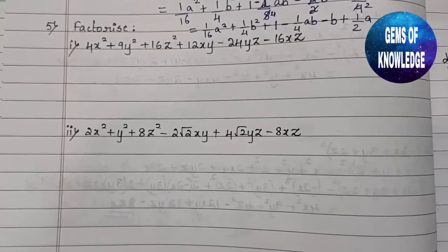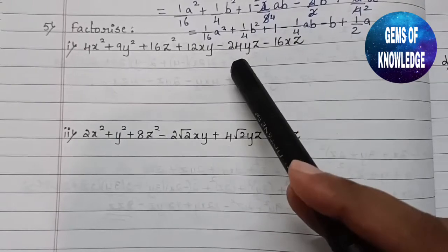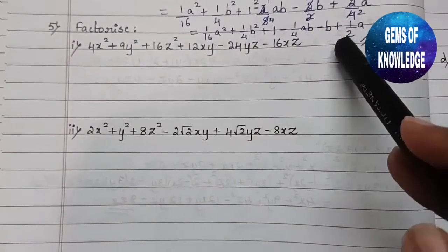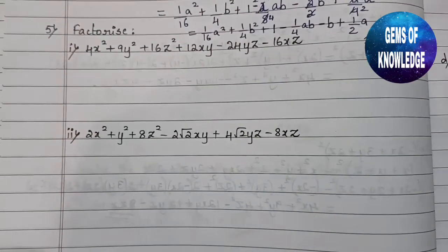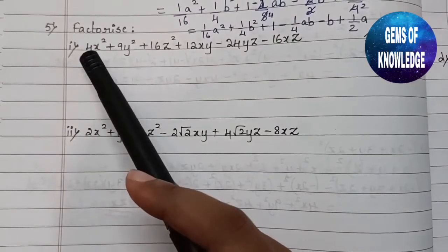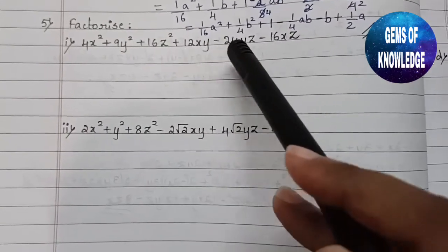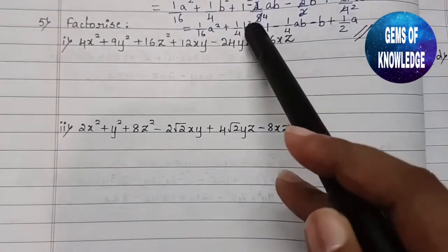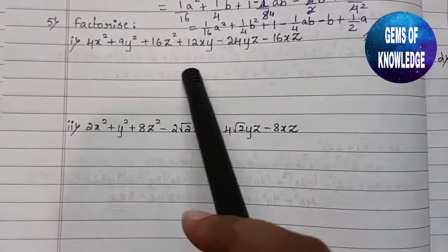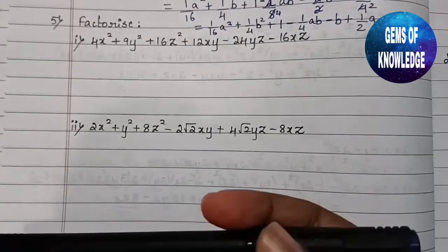The fifth question says: factorize 4x² + 9y² + 16z² + 12xy − 24yz − 16zx. By looking at the question, you have to start thinking about how to factorize it. You can see x², y², and z² are given, along with the combination terms xy, yz, and zx. So you need to check which formula will suit here.